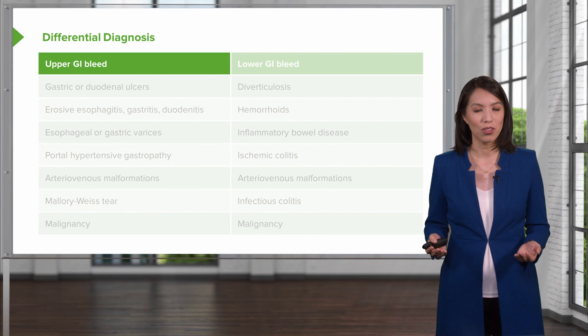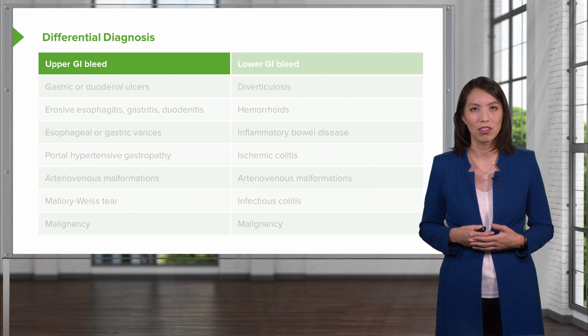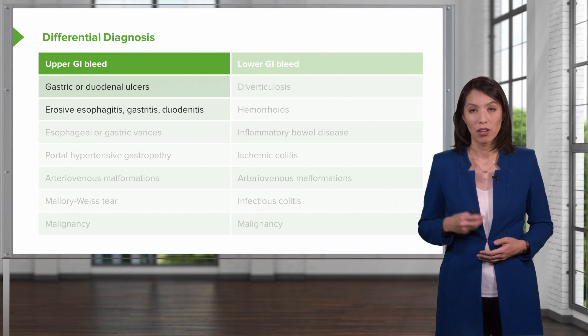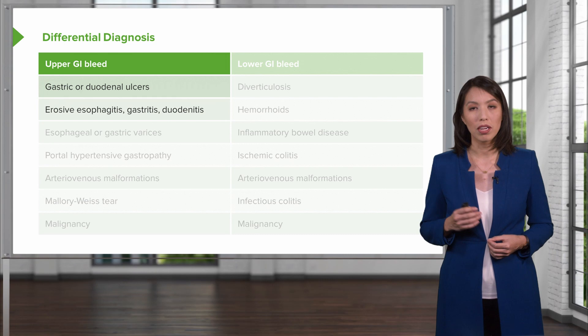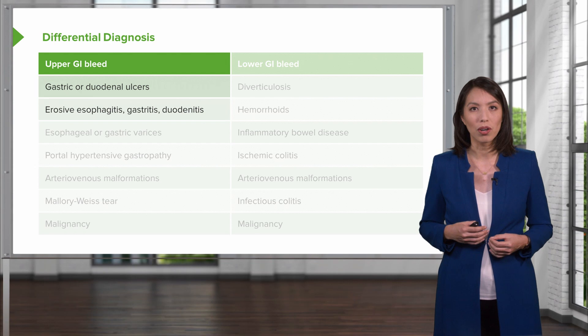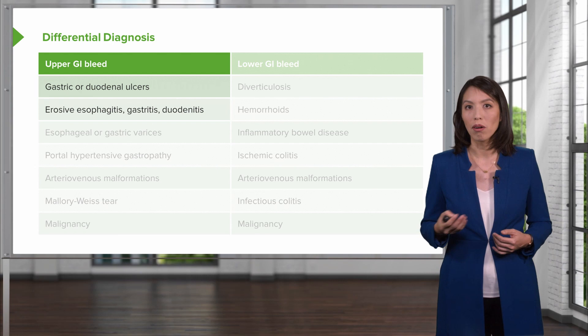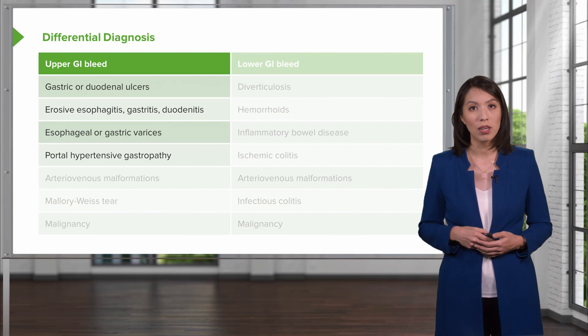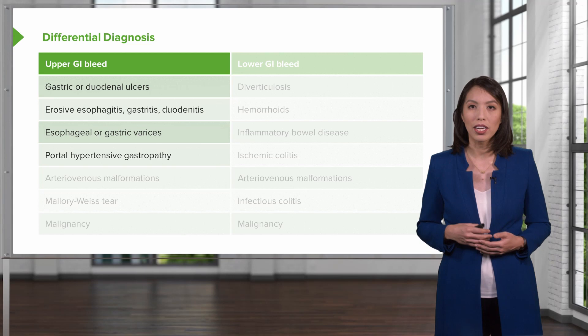Now let's look at the differential diagnosis for GI bleeds — it is quite a broad differential. For upper GI bleeds, if the patient has heavy NSAID or alcohol use, the differential might include gastric or duodenal ulcers, erosive esophagitis, gastritis, or duodenitis. If they have a known history of liver disease or cirrhosis, include esophageal or gastric varices and portal hypertensive gastropathy.